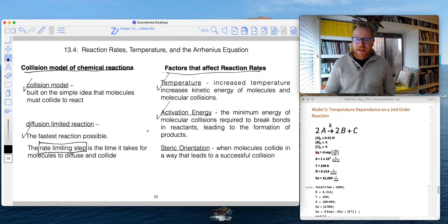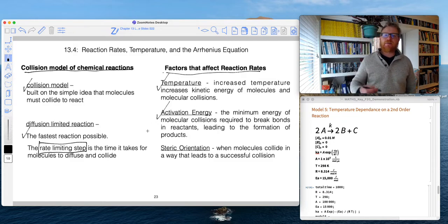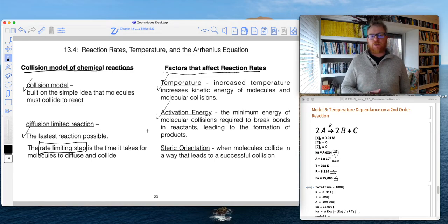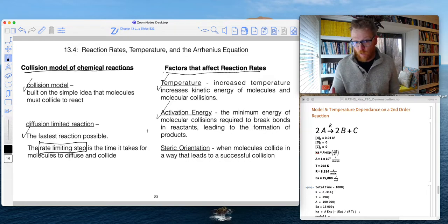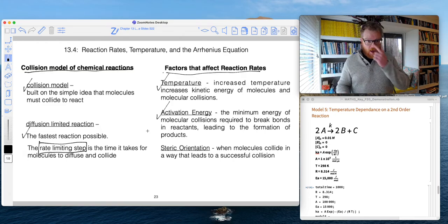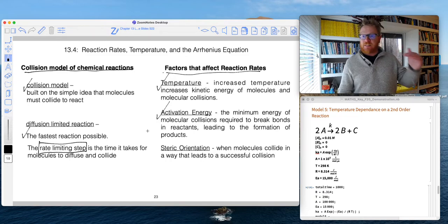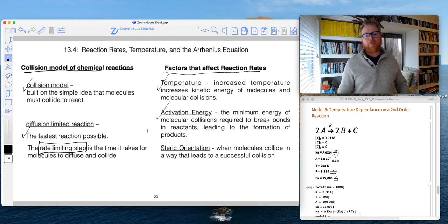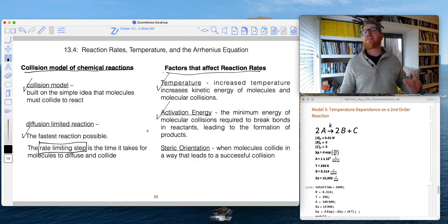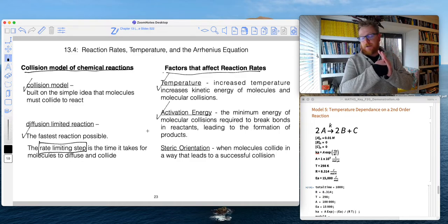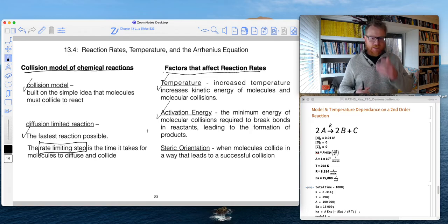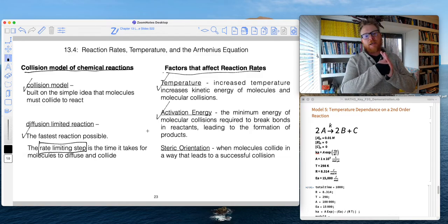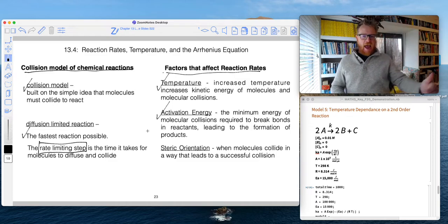There's this thing called activation energy, which is the minimum energy of a molecular collision required to break a bond in a reactant and go on to form products. So it takes energy to break a chemical bond. And oftentimes we need some extra energy in order for that to happen. And that can be realized in this activation energy from a molecule colliding. So perhaps in some instances, the molecules collide with enough energy to overcome this activation energy.